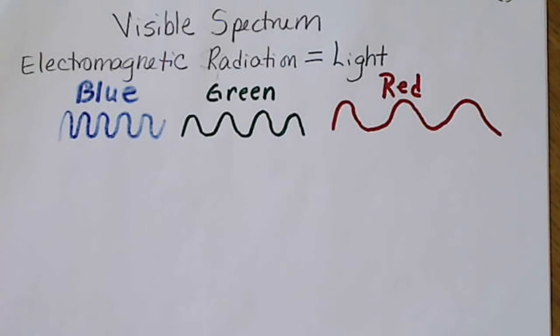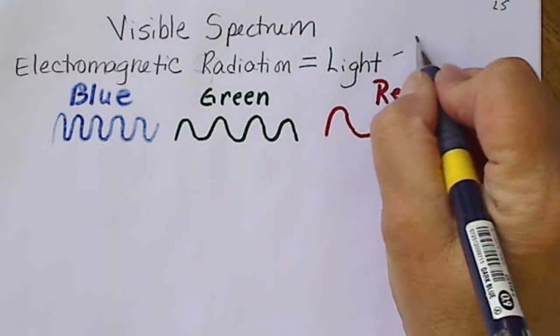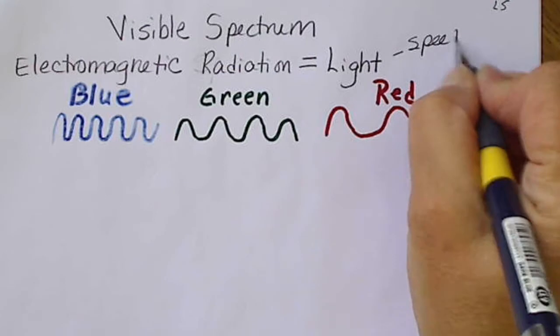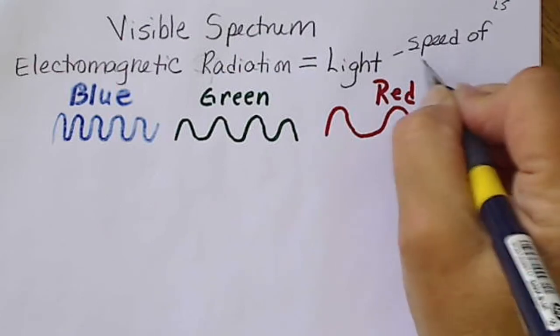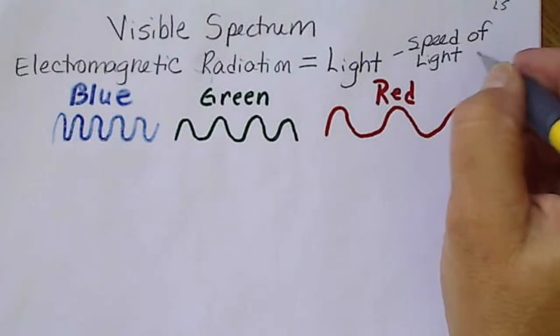When we talk about light, electromagnetic radiation is light, and we are going to see the speed of light. That's how fast light travels, and it's always a constant. The speed of light we represent by C.